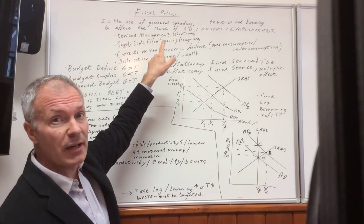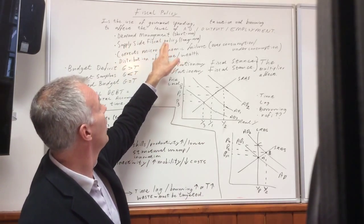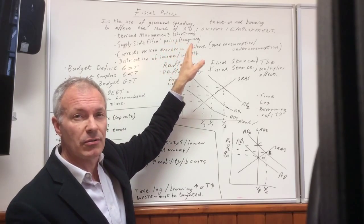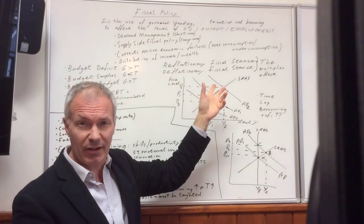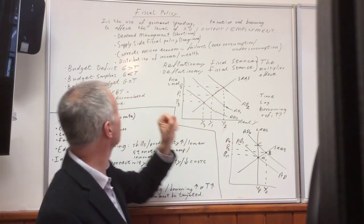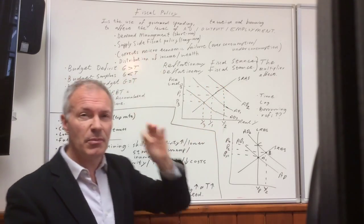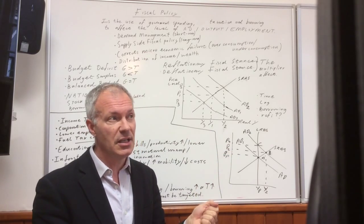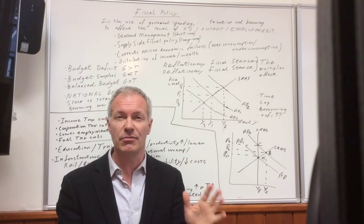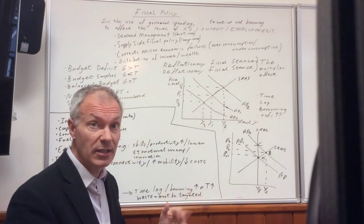First of all, there's demand management, the Keynesian approach, which is often short run, where governments can affect the level of aggregate demand in the economy. But also, it's very important to bear in mind that Fiscal Policy has a supply side impact, and indeed, governments have emphasised this in recent decades, since the 80s really.